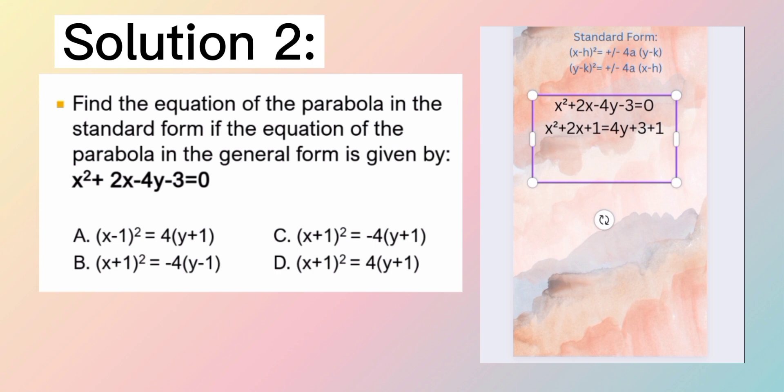Then, simplify. x plus 1. Sana po nakakasunod kayo. Is equal to labas natin si 4 kasi common. 4 times y plus 1. Ba't nagka ganun? Ang magiging ano natin dito, 4y plus 3 plus 1 is equal to 4. 4y plus 4. Nilabas natin si 4. Therefore, 4y plus 1 times 4 is equal to 4y plus 4. The answer is x plus 1 squared is equal to 4 times the quantity of y plus 1.